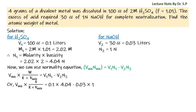Substituting values: V_mixture × (4 / equivalent weight E) / V_mixture = 0.1 × 4.04 − 0.03 × 1. Here V_mixture cancels. Therefore equivalent weight E = 4 / 0.374, which equals 10.695 amu.